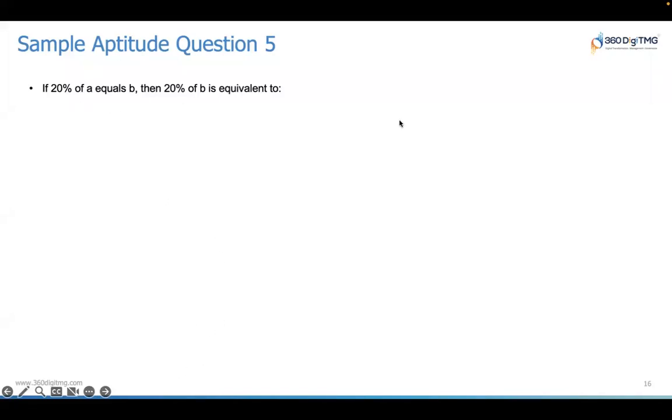So the answer to this question is as follows. 20%, if you were to represent that as a number 20 by 100, which will be 0.2. So 20% of A is equivalent to B. So 0.2 of A is equivalent to B. Then 20% of B is equivalent to what is a question? What is 20% of B? 0.2 times of B. And you know that B is equivalent to 0.2 into A. So in the place of B, substitute this part. So you get 0.2 into 0.2 into A.